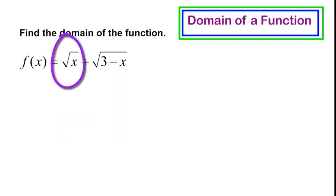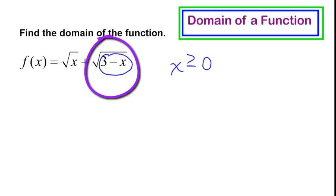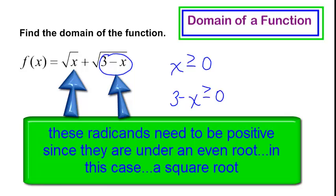From this first one, I see that x needs to be greater than or equal to 0. Okay, that's it. But I have another square root, and underneath that square root, I have 3 minus x. This 3 minus x, I'm not for sure what it is, but I know that it needs to be greater than or equal to 0. Because remember, under the square root, or a fourth root, or a sixth root, an even root, I have to have it greater than or equal to 0. It cannot be negative.